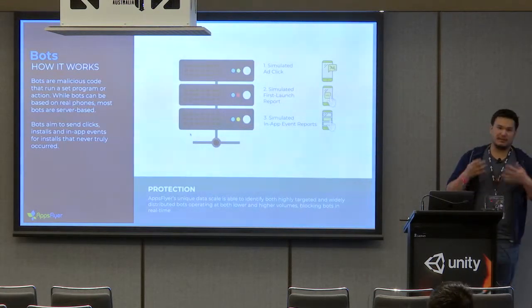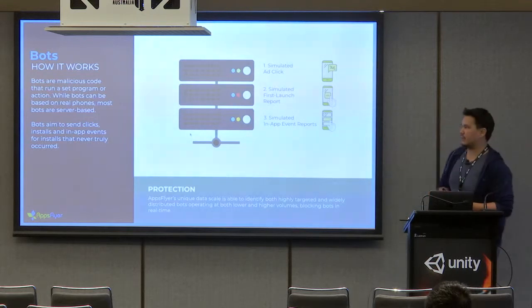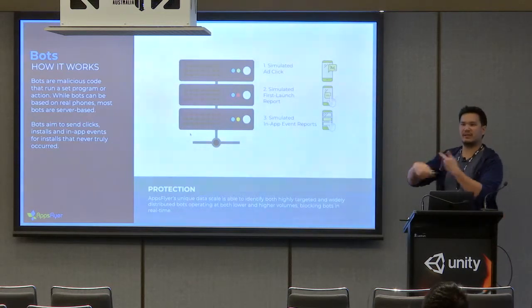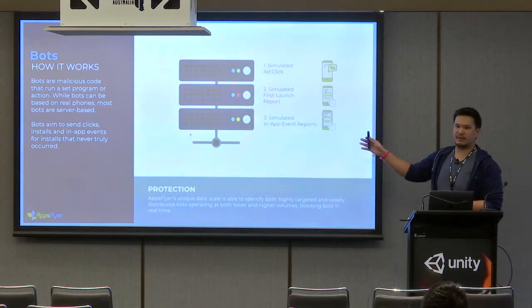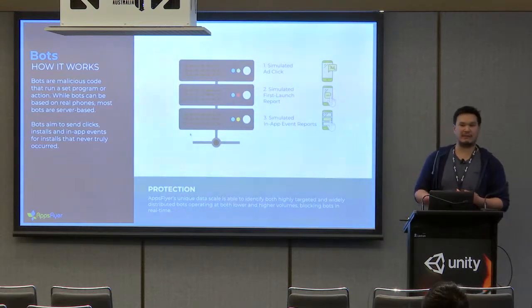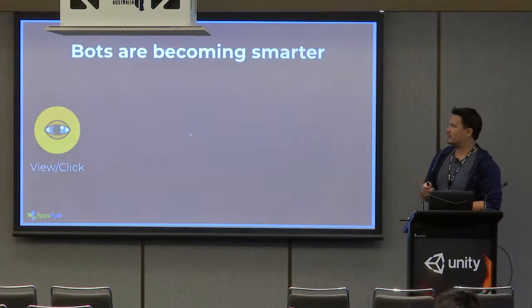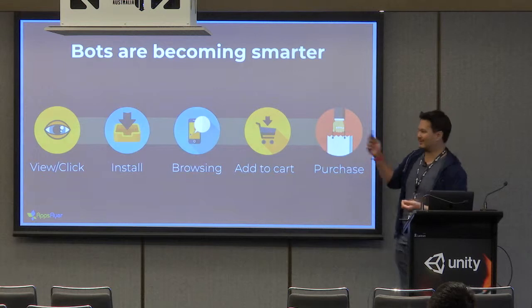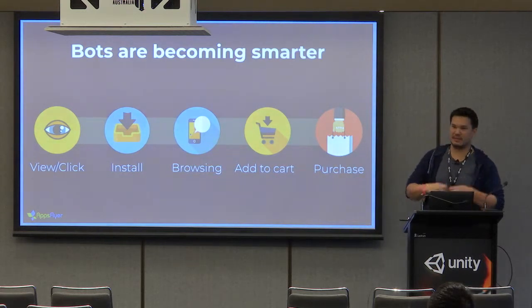Bots are the most advanced and ever-evolving type of fraud we see currently. They don't even require devices — completely server-side. They started with basic click-and-install faking, then evolved to simulate in-app events and in-app reports. These fraudsters became more sophisticated: they investigate your app, understand expected user behavior, and try to simulate it. Bots can now do everything from installing, browsing, adding items to cart, playing different levels, and making purchases — all looking very legitimate.